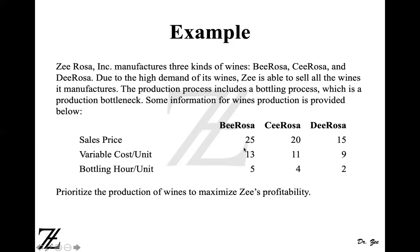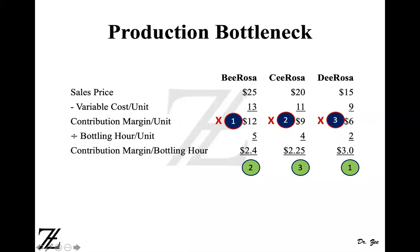So the question asks you to prioritize the production of wines to maximize Z's profitability.